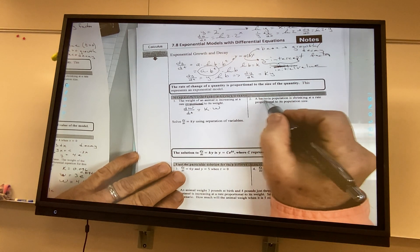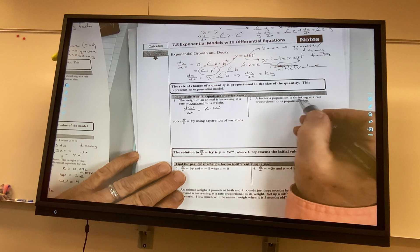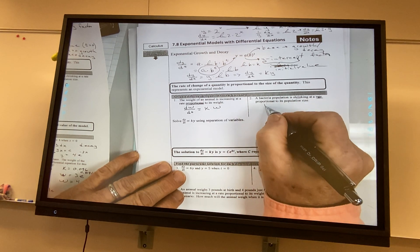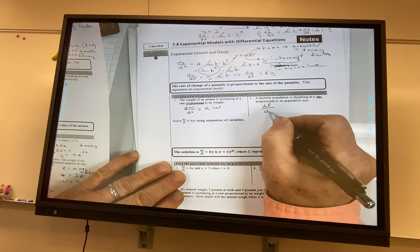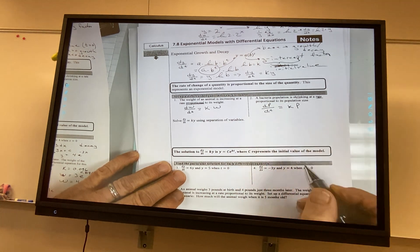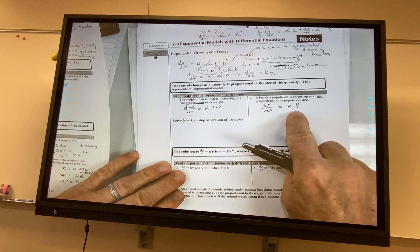Right here, I have a bacteria population is shrinking at a rate proportional. So, I have a rate, so I have dp over dt. It's proportional to the population size. So, this will be an exponential function. This will be an exponential function.